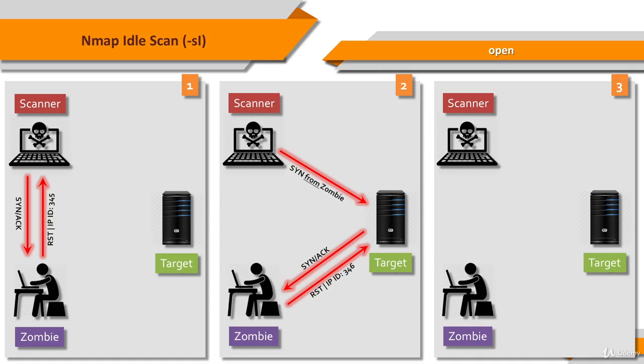The third step is to probe the zombie's IPID again. The attacker sends a SYN/ACK to the zombie again. The RST packet of the zombie has an IPID which is increased by 2 since the first step, so the port is open.